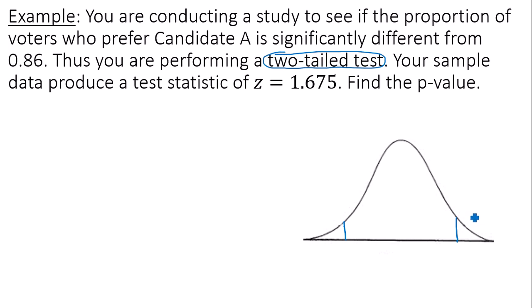So your p-value is actually the area of the right-hand tail plus the area of the left-hand tail. Well, I know that my test statistic is 1.675. Since I'm dealing with a proportion, I know I'm dealing with the standard normal distribution. My test statistic was z. So I know that my mean is 0, which means my 1.675 should be located over to the right-hand side here.